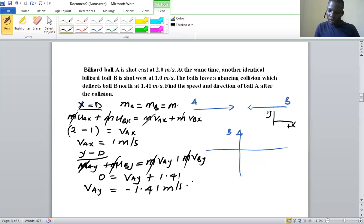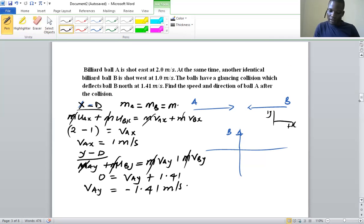Now we can find the magnitude, which is going to be the square root of vAx squared plus vAy squared.